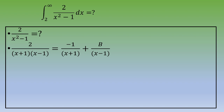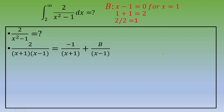Now let's do the same for capital B. We focus on the denominator x minus 1, setting x minus 1 equals 0, so x equals 1. Plugging this in gives 1 plus 1 equals 2. We divide the numerator 2 by 2, which equals 1. So capital B is 1. We now know both capital A and capital B.